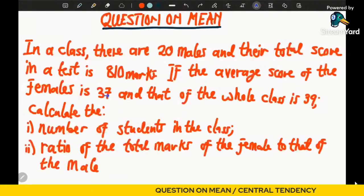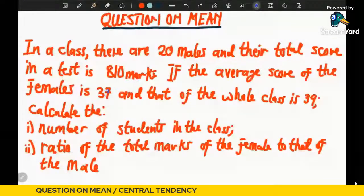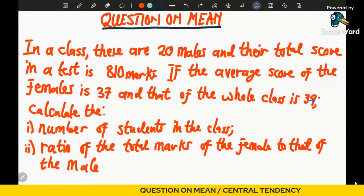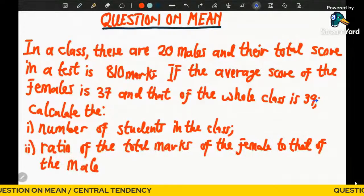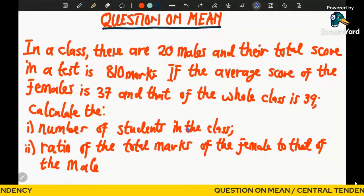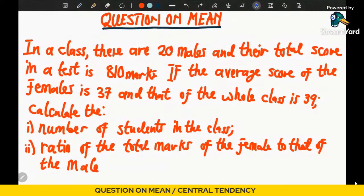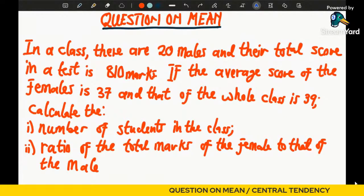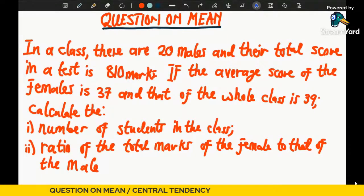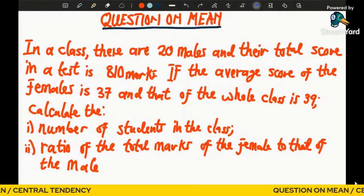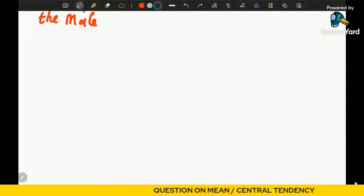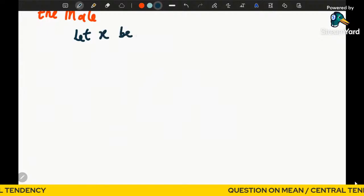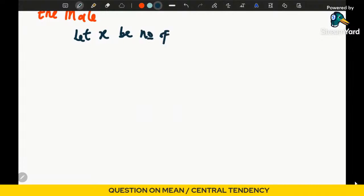We are told the mean score of the females. What we are going to do primarily is find the total marks they had in the test. We also know the average score of the whole class — including males and females — is 39. Since we don't know the number of females, we represent it by a variable. Let x be the number of females.